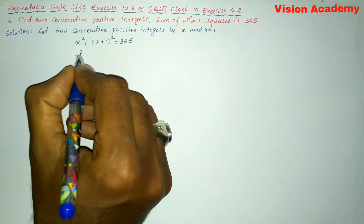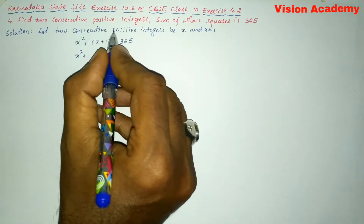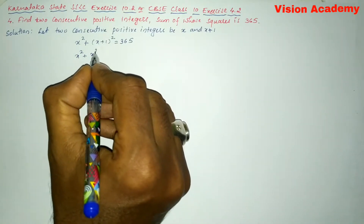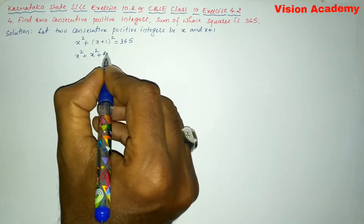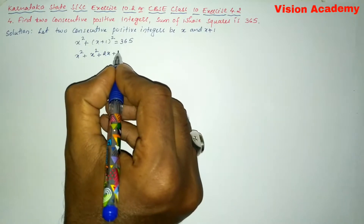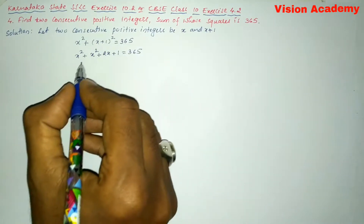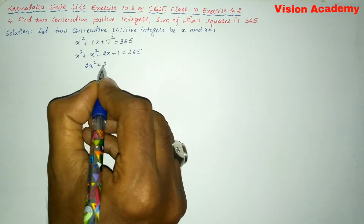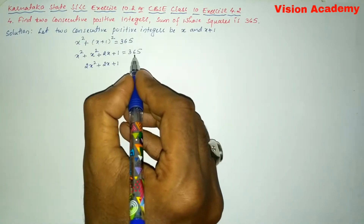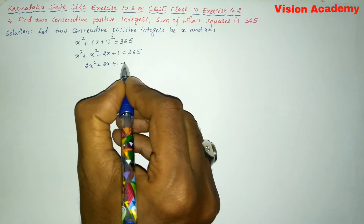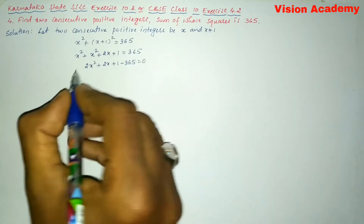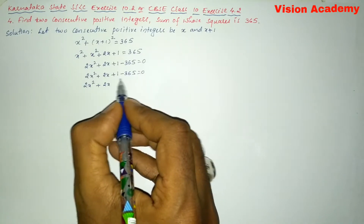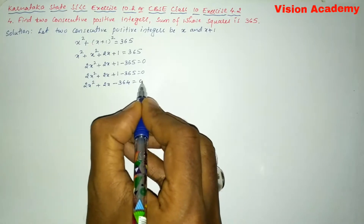Let us simplify: x squared plus x squared plus 2x plus 1 equals 365, using the identity (a + b)² = a² + 2ab + b². So x squared plus 2ab which is 2x, plus b squared which is 1, equals 365. Bringing 365 to the LHS gives 2x² + 2x + 1 - 365 = 0.